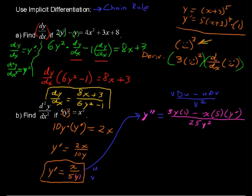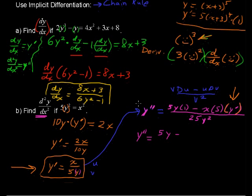Now we have to do some substitution. This y prime is what we have over here, so we can substitute that back in. Cleaning this up, we have y double prime, the second derivative which is what we're finding, 5y minus 5x multiplied by x over 5y, because that's what y prime is. So 5x times x over 5y, all over 25y^2.